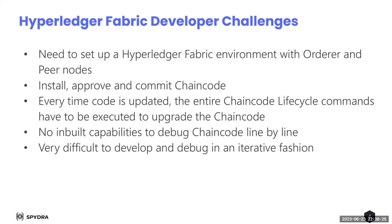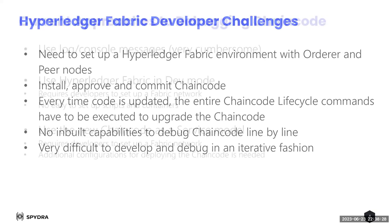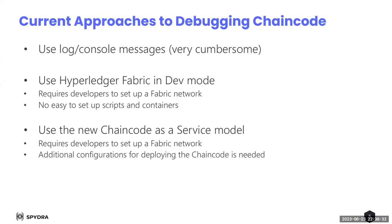Because of these challenges, people don't really do debugging within an IDE. Most people, including us, start with just logging messages, deploying the chain code, seeing the output, making changes, redeploying, and checking log messages to trace code flow. That is very cumbersome, and it was taking a lot of developer time — so we started looking at different ways to actually debug chain code.